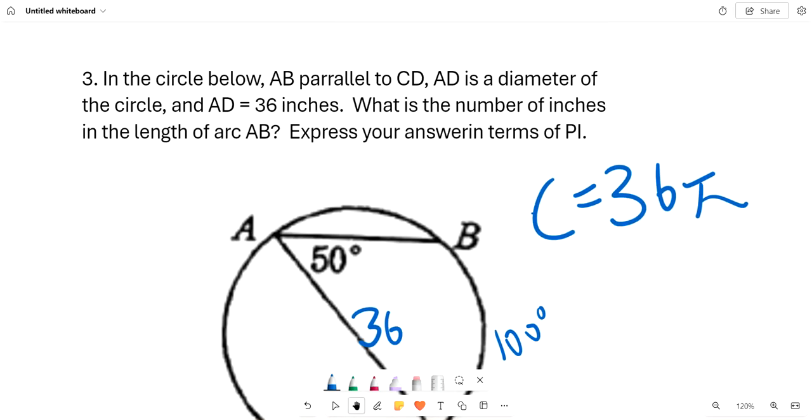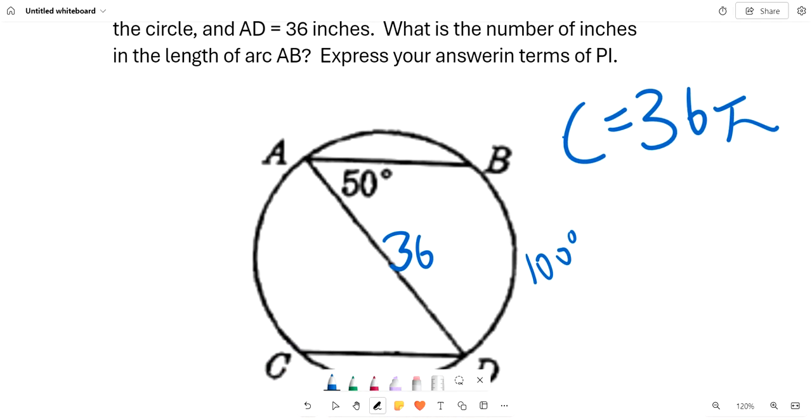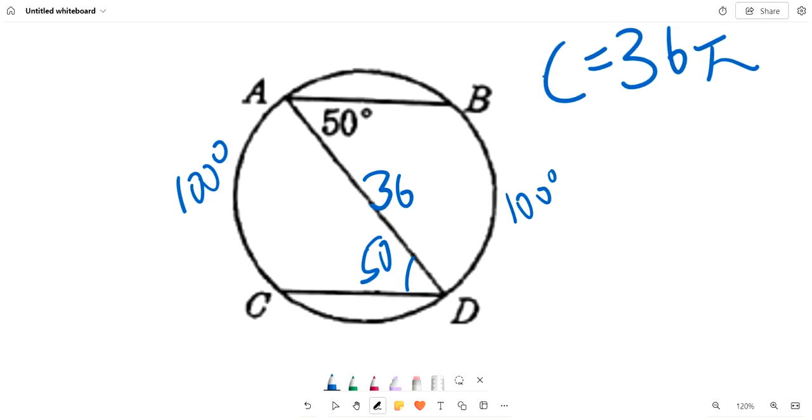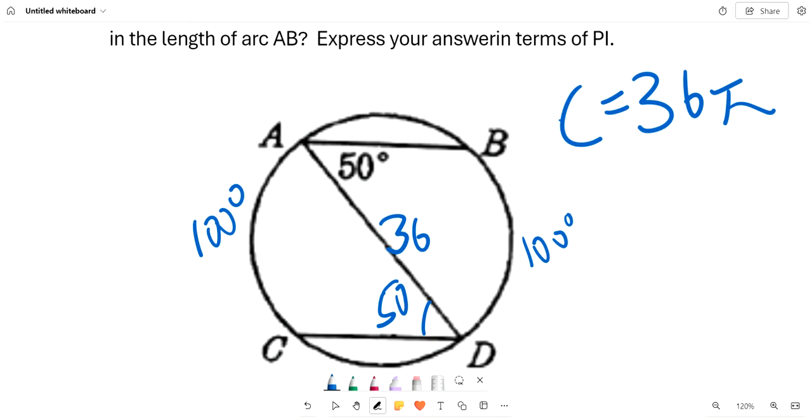And because it's parallel, then alternate interior angles makes it equal, and so it's also 100 degrees. And because of symmetry across the vertical line, then that means this is 80 degrees, and this is also 80 degrees.